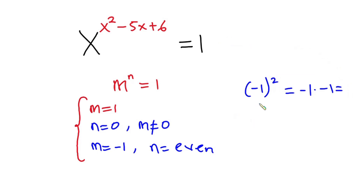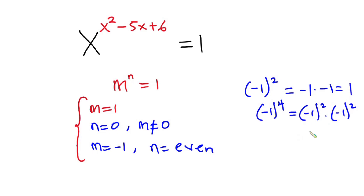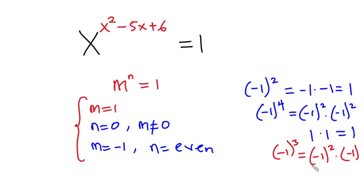Now if you have negative 1 to the fourth power, this is the same as negative 1 squared times negative 1 squared. Negative 1 squared is 1, so we get 1 times 1, which is 1. But if we have negative 1 to the third power, that gives us negative 1 squared times negative 1, which is 1 times negative 1, equal to negative 1. So for this statement to be true, m should be equal to negative 1 and n should be even.